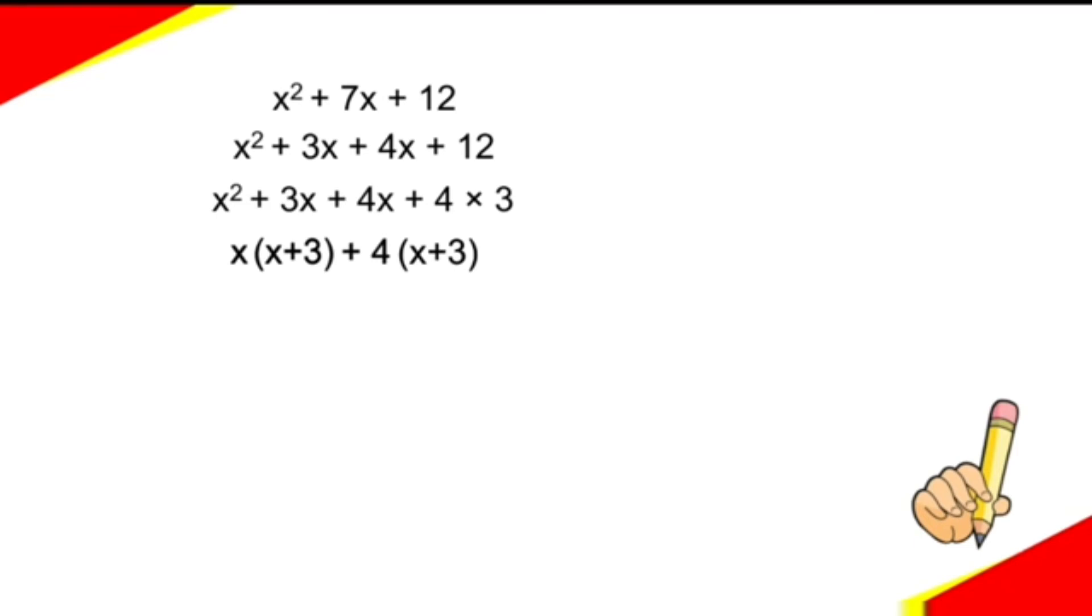So let us take x + 3 as a common. Then it remains x + 4. So x + 3 and x + 4 are the two factors for the polynomial x² + 7x + 12.